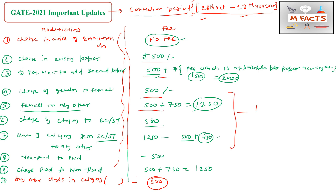This is a one-time change only. You can log in to your GATE application and modify these things only once, so please consider that only one-time modifications are applicable for GATE 2021.